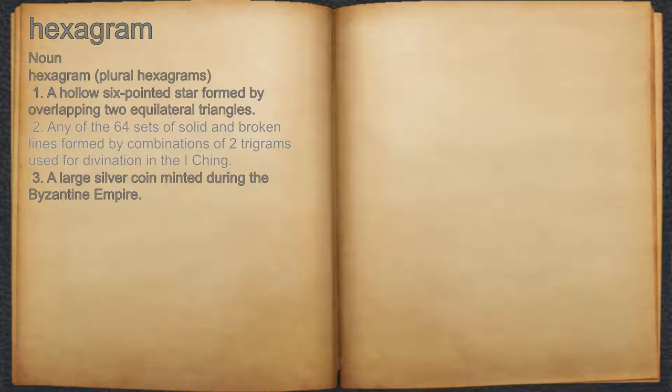2. Any of the 64 sets of solid and broken lines formed by combinations of two trigrams used for divination in the I Ching.